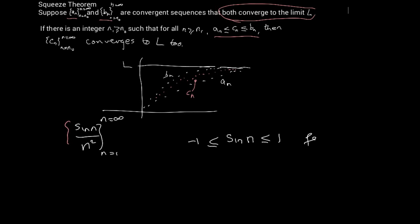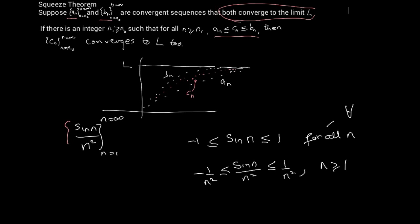This is true for all n — this symbol that looks like an upside-down A means 'for all.' We know this for a fact. Now if we divide both sides by n², we get sin(n) over n², and that means here we have minus one over n² and here we have one over n². So we've got the nth term of our sequence, sin(n) over n², between minus one over n² and one over n², and this is true for all n greater than or equal to one.